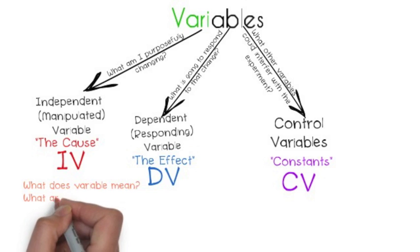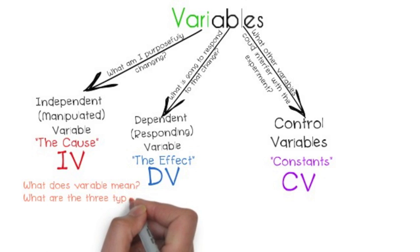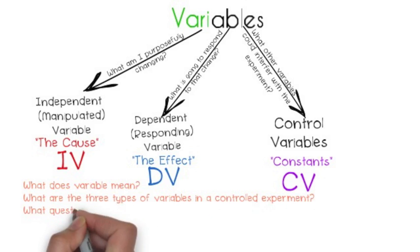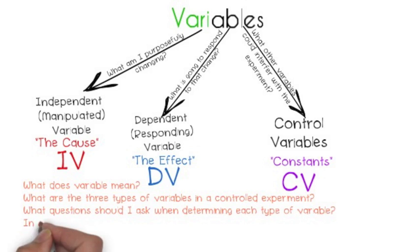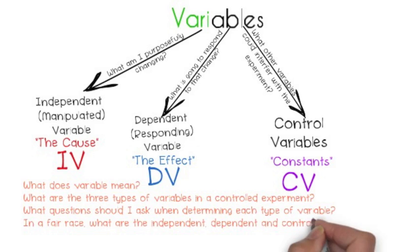To review, let's ask ourselves these questions: What does variable mean? What are the three types of variables in a controlled experiment? What questions should I ask when determining each type of variable? In the fair race example, what was the independent, dependent, and controlled variable? Pause to answer these questions and play when ready.